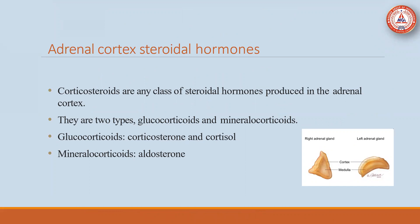What are adrenal cortex steroidal hormones? All the corticosteroids are steroidal hormones produced by the adrenal cortex. The adrenal gland contains two parts: the outer part is known as the adrenal cortex and the inner part is known as the medulla. There are two types of corticosteroids: glucocorticoids and mineralocorticoids. The glucocorticoids are mainly corticosterone and cortisol, whereas the mineralocorticoids are aldosterone.